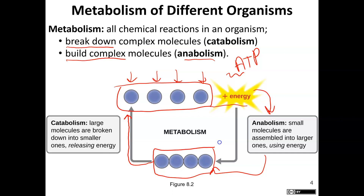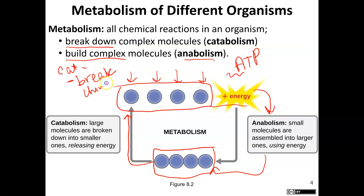Here's how I remember anabolic and catabolic. Catabolic has the word 'cat,' and cats like to jump on counters and knock things off — they tend to break things. So a catabolic reaction breaks stuff down. For anabolic, if you've ever heard of anabolic steroids, they build up muscle. So anabolic is the opposite of catabolic — it builds things up.